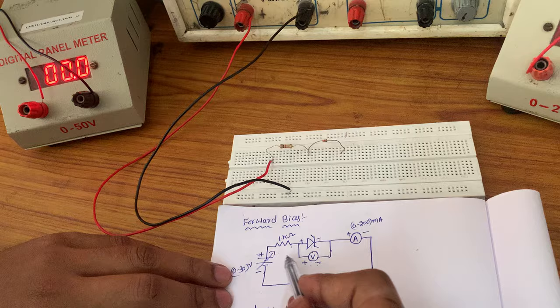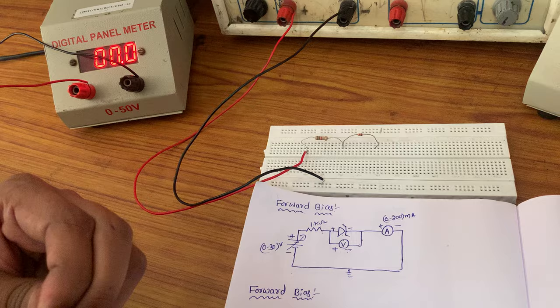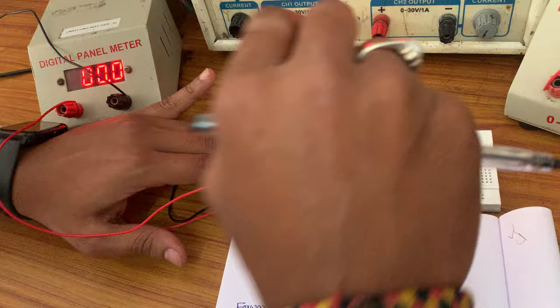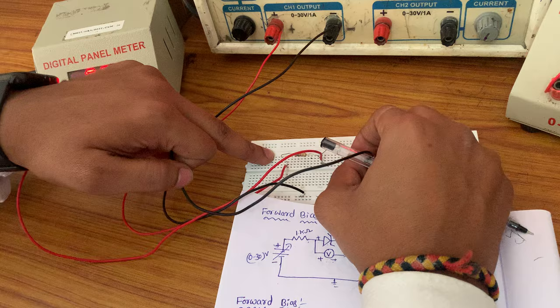Next, we will connect the voltmeter here. The voltmeter positive is connected to the Zener diode anode. This voltmeter positive is connected to the Zener diode junction — the anode. And the voltmeter negative is connected to the Zener diode cathode. So across the Zener diode, we connect the voltmeter.